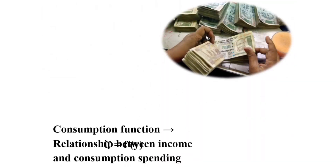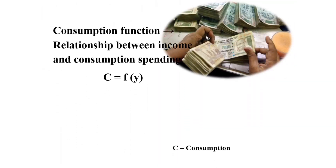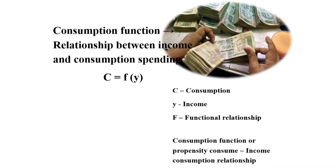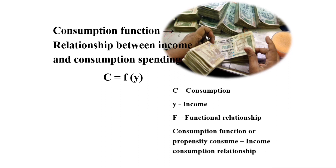Consumption function is the relationship between income and consumption spending: C is equal to a function of Y. Here, C is equal to consumption, Y is equal to income, and F denotes the functional relationship.